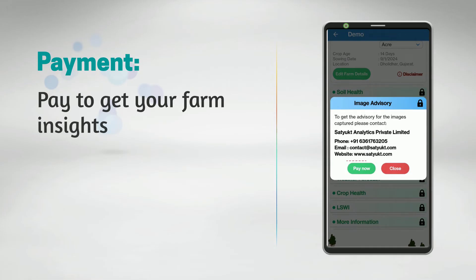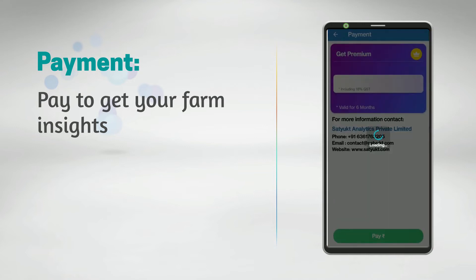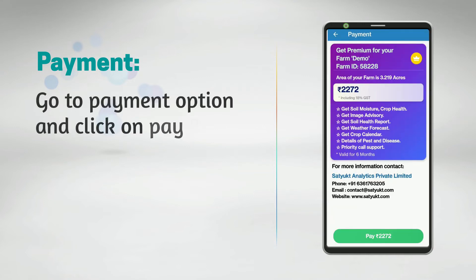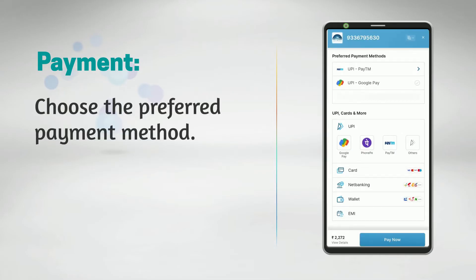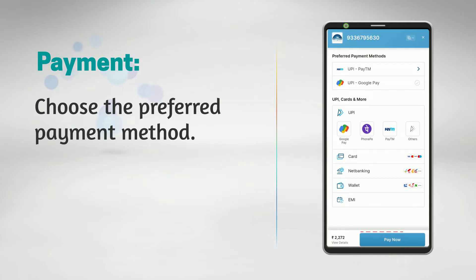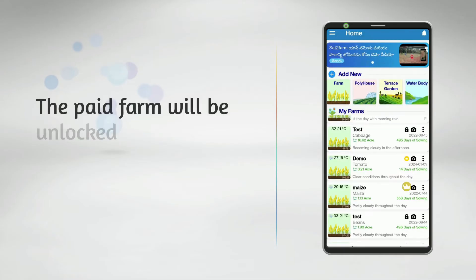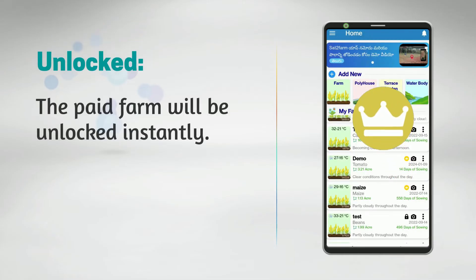To make a payment, go to any feature and tap on the 'Pay Now' option, then tap on Pay. Choose your preferred payment method and tap on Pay Now. Once the payment is done, the paid farm will be unlocked instantly.